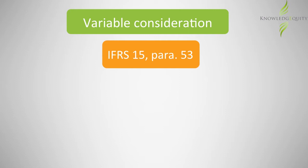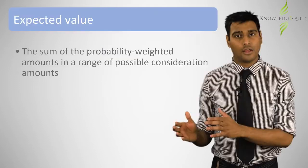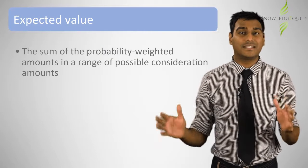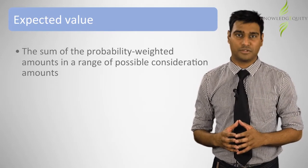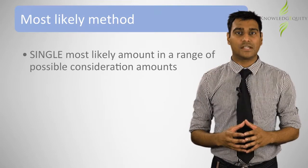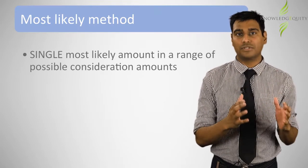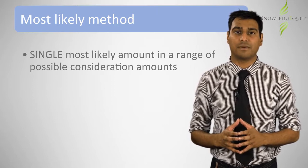IFRS 15 paragraph 53 allows two methods for calculating variable consideration. The first is the expected value method, which is the sum of all probability-weighted amounts in a range of possible consideration amounts. The second is the most likely method, which is the single most likely amount in a range of possible consideration amounts.